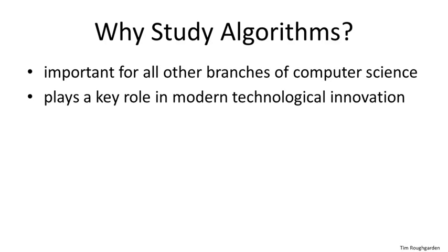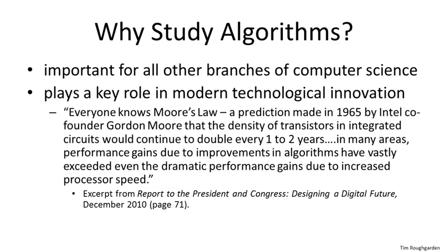A second reason to study algorithms is that they play a key role in modern technological innovation. For example, search engines use a tapestry of algorithms to efficiently compute the relevance of various web pages. The most famous such algorithm is the PageRank algorithm used by Google. Indeed, in a December 2010 report to the United States White House, the President's Council of Advisors on Science and Technology argued that in many areas, performance gains due to improvements in algorithms have vastly exceeded even the dramatic performance gains due to increased processor speed, as you'd be familiar with in the form of Moore's Law.